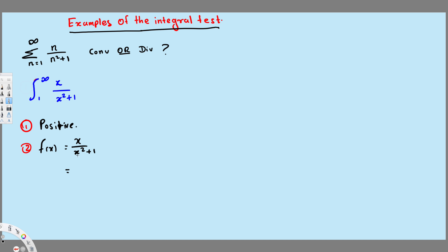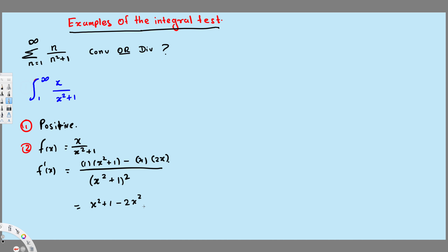This is going to be a quotient rule because we are dividing these two. So we square the denominator: (x squared plus 1) squared. In the numerator we have the derivative of x — that's just 1 — times the denominator, x squared plus 1, then minus x times the derivative of the denominator, which is 2x. If you simplify, that's x squared plus 1 minus 2x squared, so 1 minus x squared over (x squared plus 1) squared.